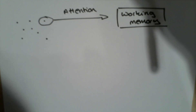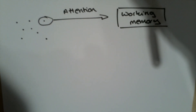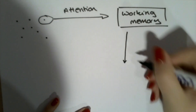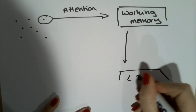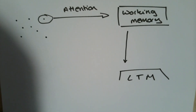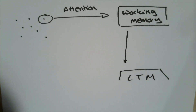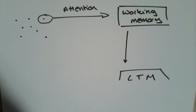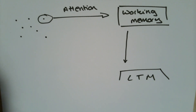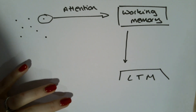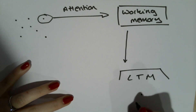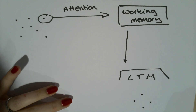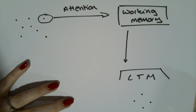In order to support our working memory we want to encode information into our long-term memory. The great thing about long-term memory is that it is essentially infinite — we can store as much information as we like, whereas our working memory can only store a certain number of facts at any one time. The way information is stored in our long-term memory is in the form of schema. Schema is sort of like a web of knowledge of everything that we know and how it relates to everything else.